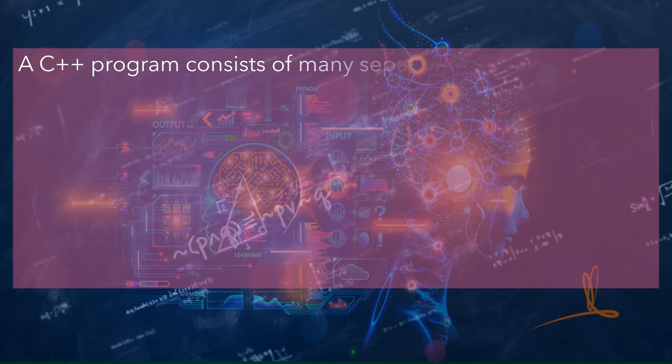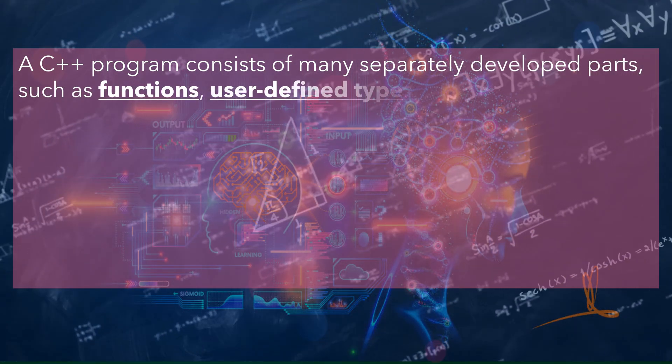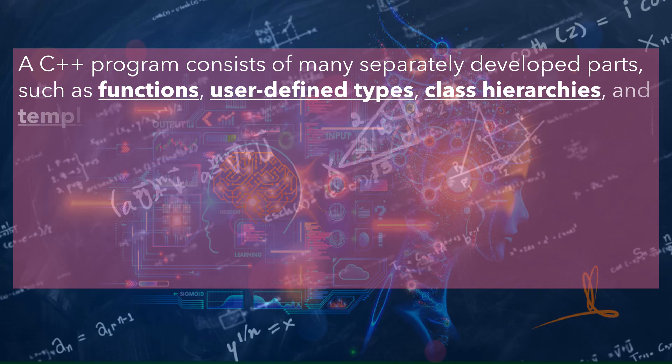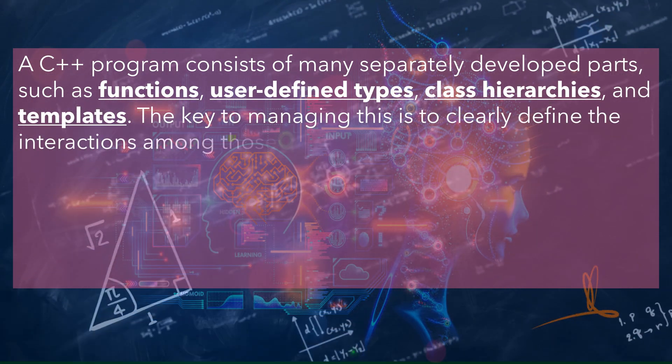A C++ program consists of many separately developed parts, such as functions, user-defined types, class hierarchies, and templates. The key to managing this is to clearly define the interactions among those parts.